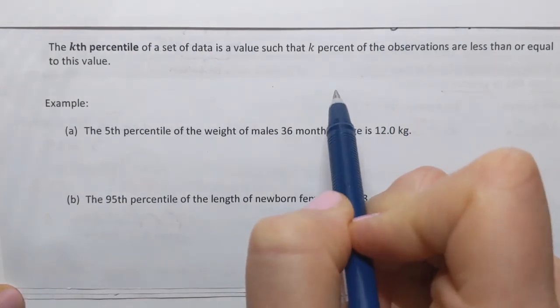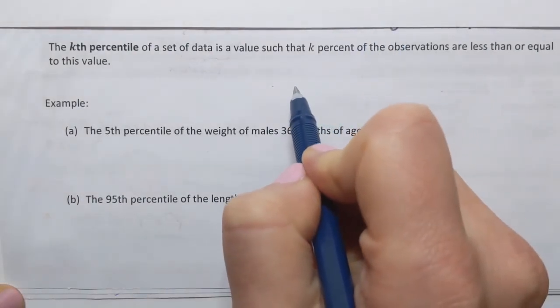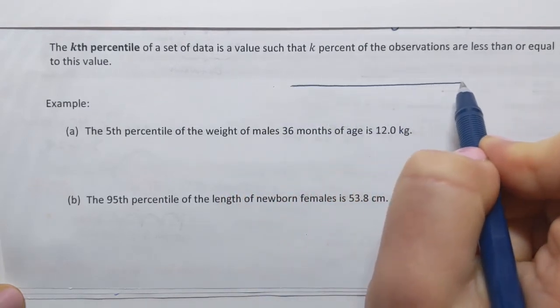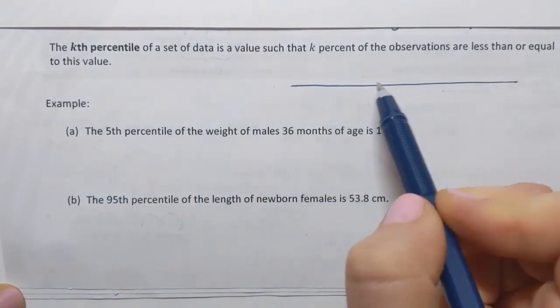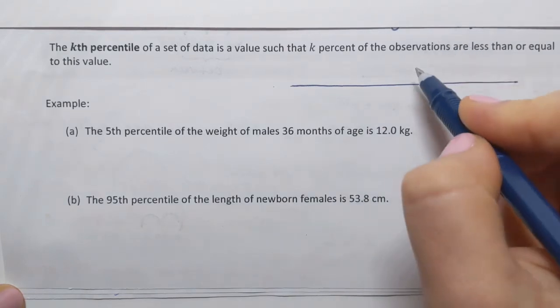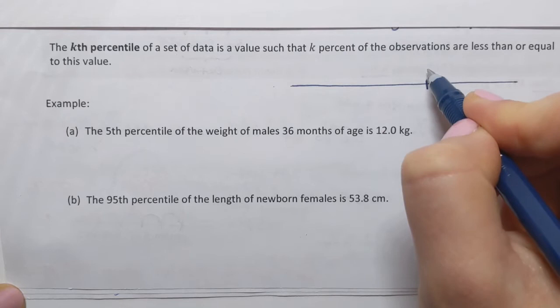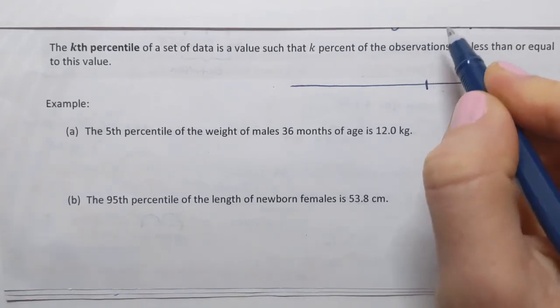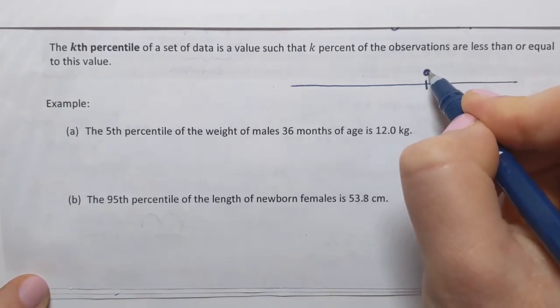I like to think about this definition by making a picture. So if I have a number line on which all values of the data set are positioned and if I pick a certain value, let's say it's gonna be here and I'm gonna denote it with a dot.